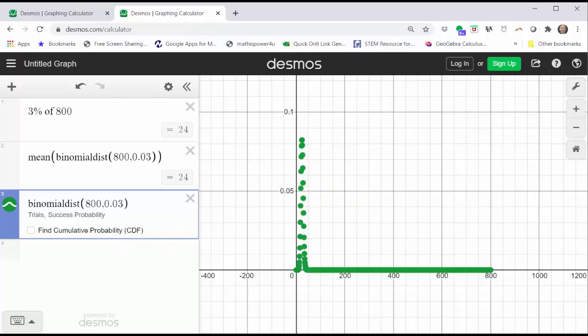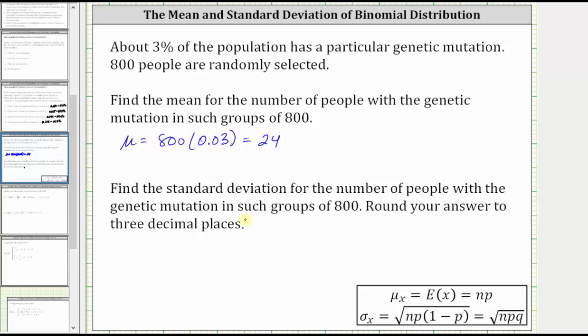Going back to our work, we're now asked to find the standard deviation for the number of people with the genetic mutation in such groups of 800, round to three decimal places. The standard deviation is equal to the square root of the product of n, p, and one minus p. One minus p is the probability of failure, which is sometimes referred to as q.